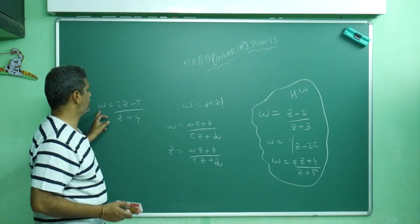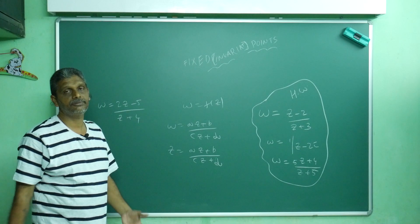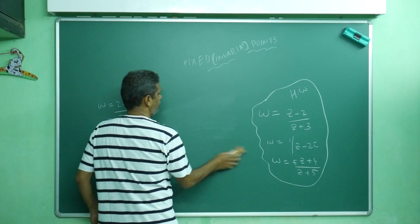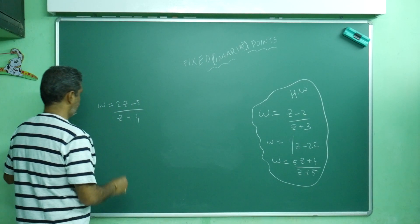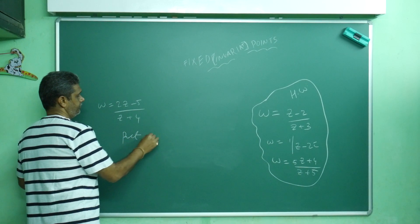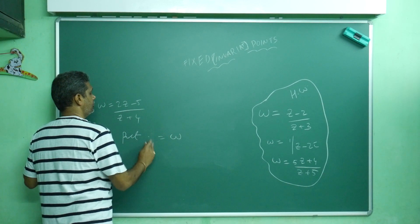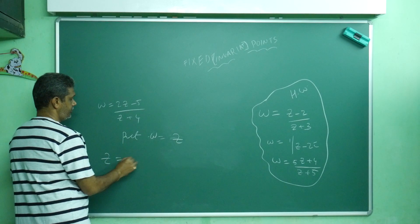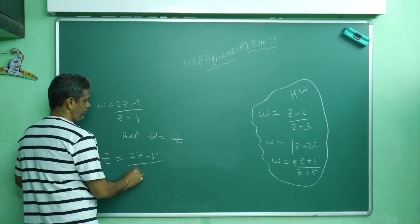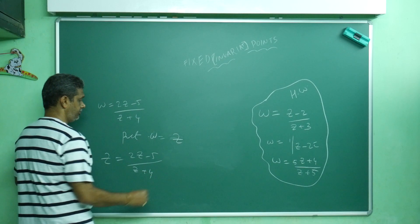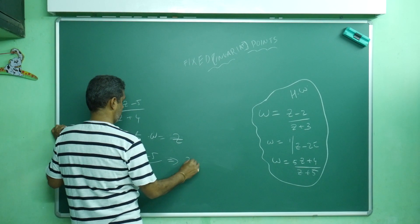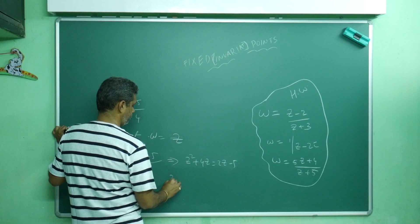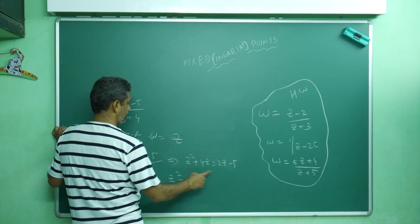Now my problem is w equals 2z minus 5 divided by z plus 4. Find the fixed point or invariant points. How will you solve? Put w equals z. So we can write z equals 2z minus 5 divided by z plus 4. Cross multiply: z times z plus 4 equals 2z minus 5. Rearranging: z squared plus 4z minus 2z equals 2z plus 5, which gives z squared plus 2z plus 5 equals 0.